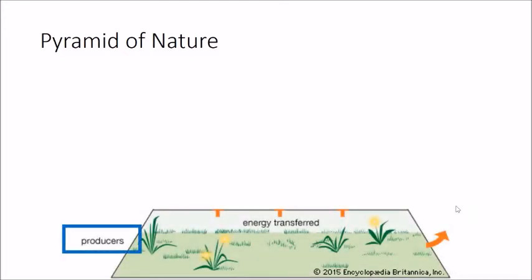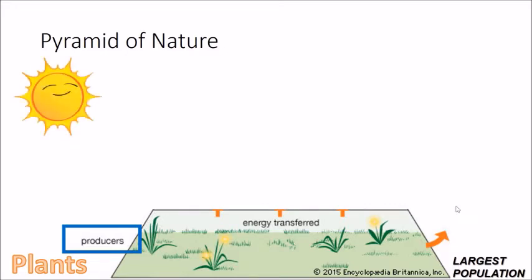The producers are actually plants, and they form the largest population among all living organisms. The sun is the main source of energy — that's what we have learned. Plants have chlorophyll, which is able to capture the light from the sun, and they make food. This is also the reason why we call plants food producers.